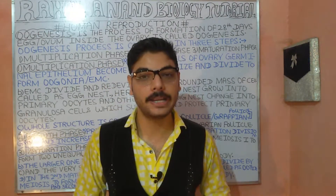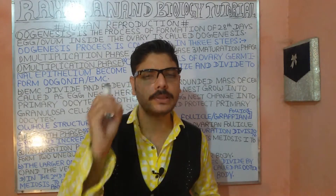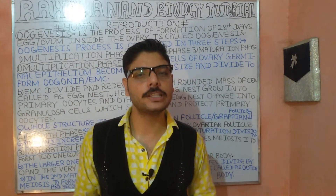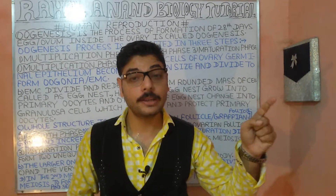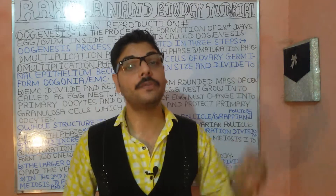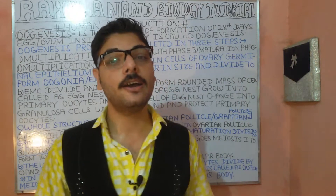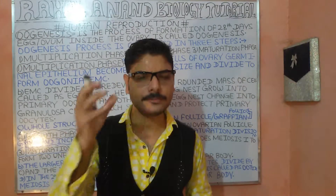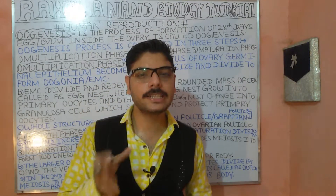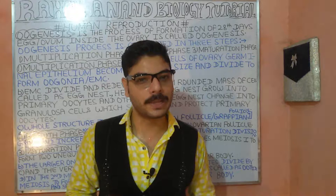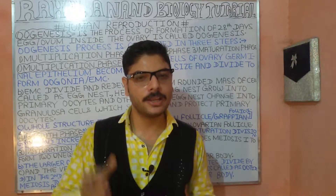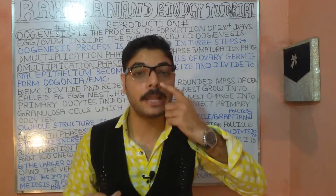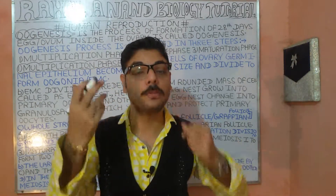The overall process of oogenesis is divided into three different phases: the multiplication phase, the growth phase, and the maturation phase.